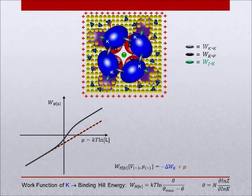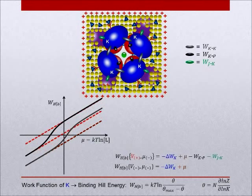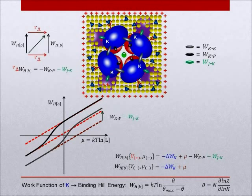Next, we activate all p and j particles by depolarizing to very positive voltages, and once more evaluate the work function. This generates new asymptotes elevated by the negative combined contributions of k-p and j-k interaction energies.